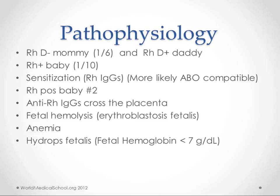So one out of six moms get together with the majority of the normal population, which does have the RH positive gene, and they produce an RH positive baby. This happens about one in 10 pregnancies — you have an RH positive baby.